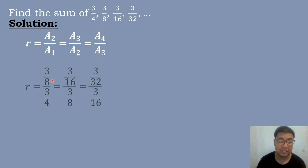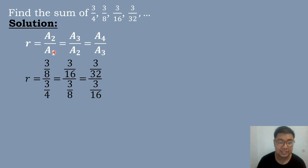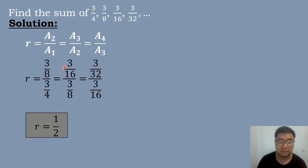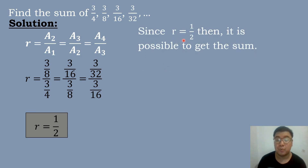We will substitute the corresponding values: A sub 2 is 3/8, A sub 1 is 3/4, A sub 3 is 3/16, A sub 2 is 3/8, A sub 4 is 3/32, and A sub 3 is 3/16. Then we divide: 3/8 divided by 3/4 equals 1/2, 3/16 divided by 3/8 equals 1/2, and 3/32 divided by 3/16 equals 1/2. Since R equals 1/2, which is between negative 1 and 1, it is possible to get the sum.